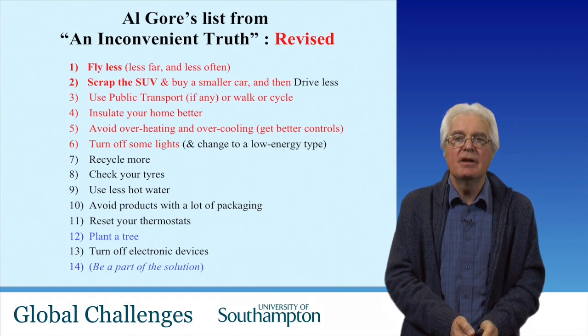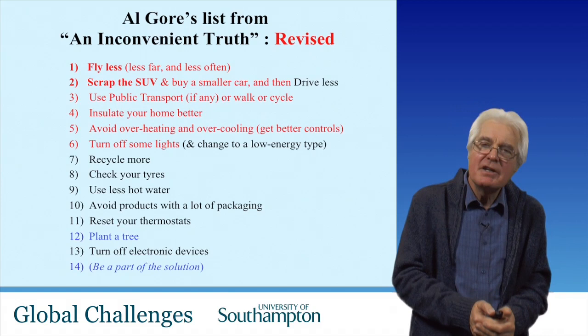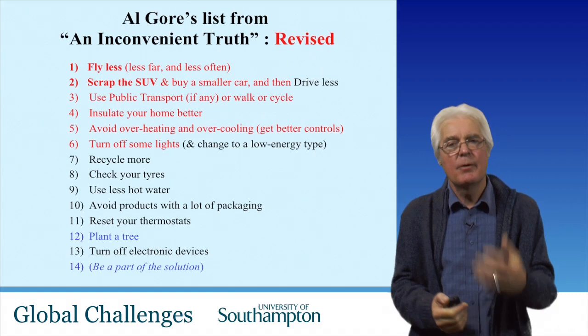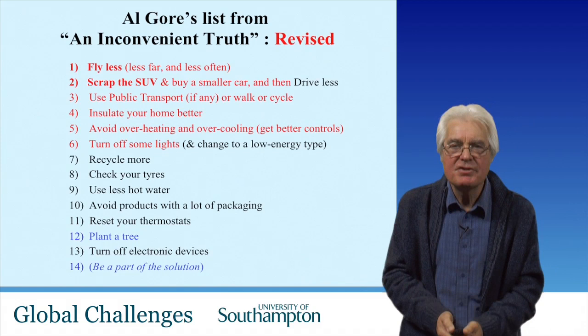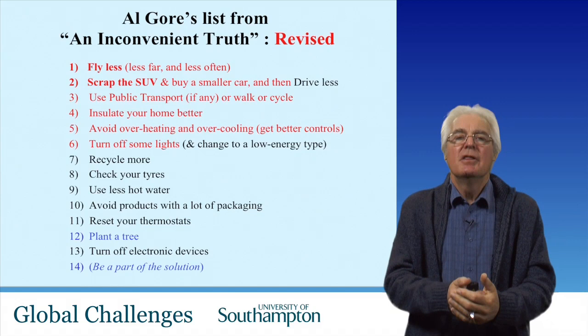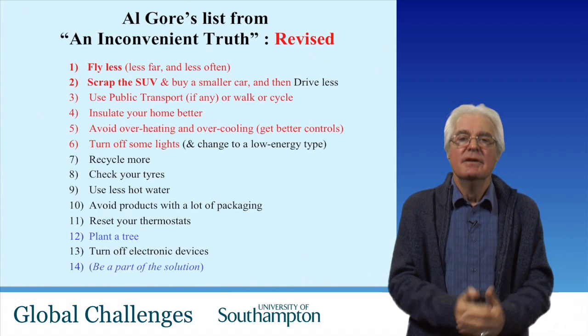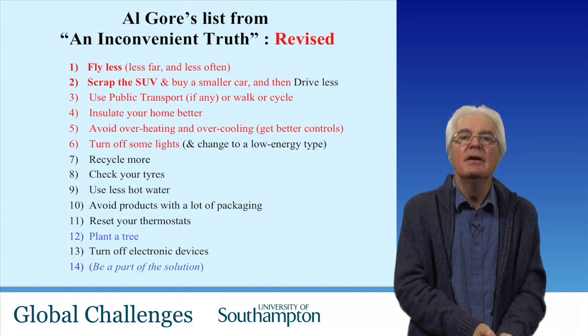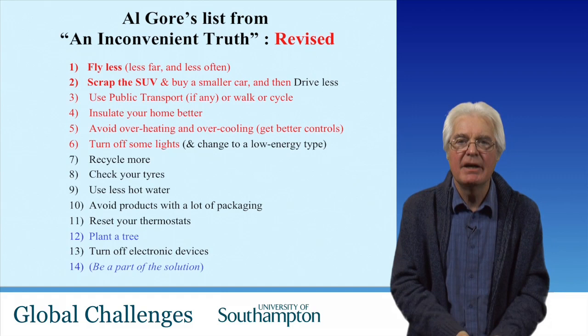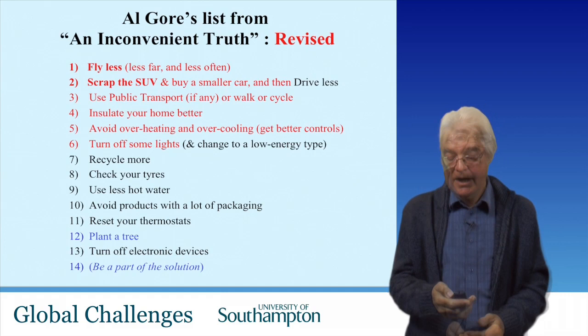We can also do things ourselves. Al Gore produced a list in his book An Inconvenient Truth, but I've added the things that really make a difference, shown in red. For most of us the biggest change we could make is flying less, buying a smaller and more efficient vehicle, driving less far and using public transport. Those things are relatively easy to achieve and would make a big difference, but there are many other things on the list that individuals can use to make a difference.